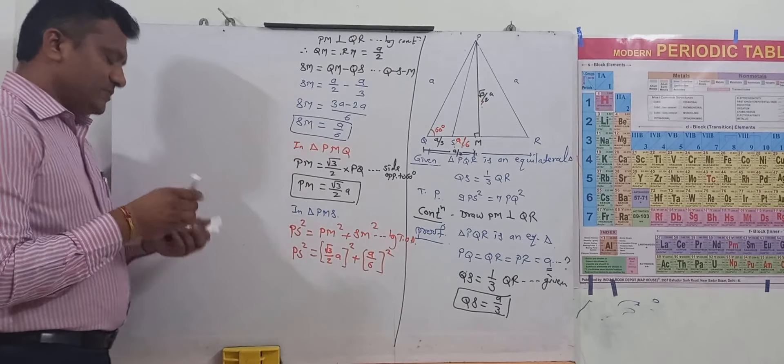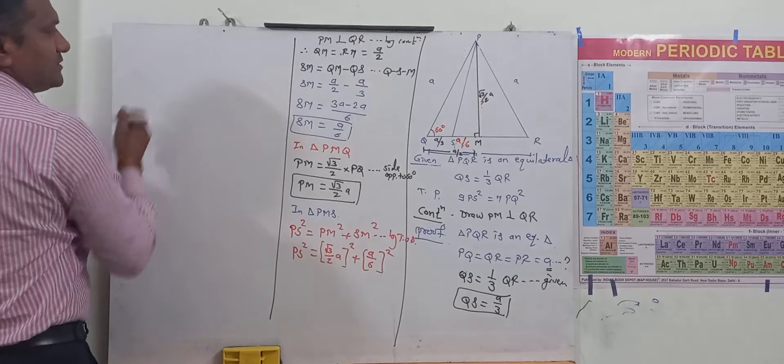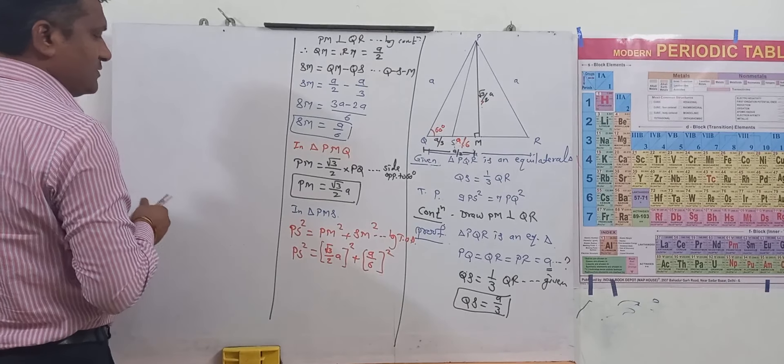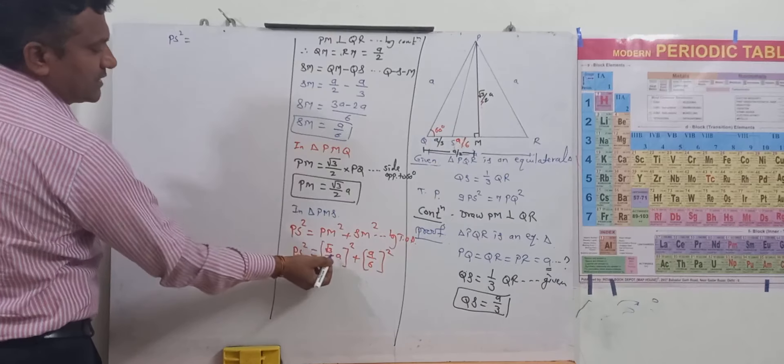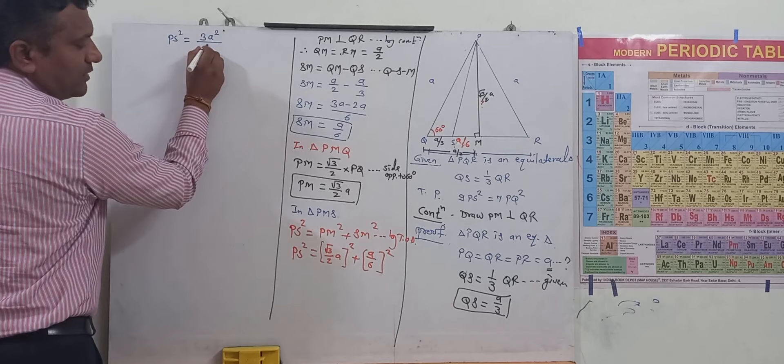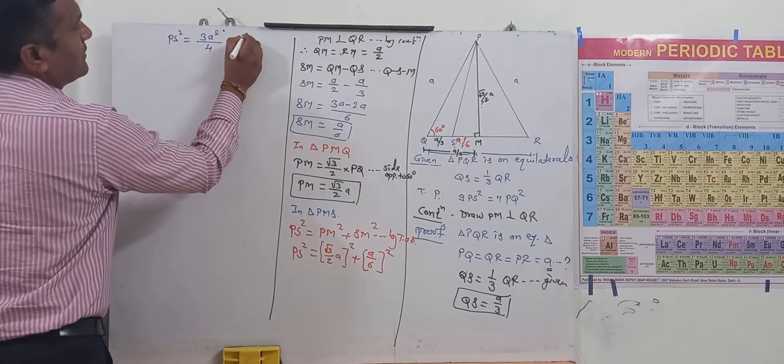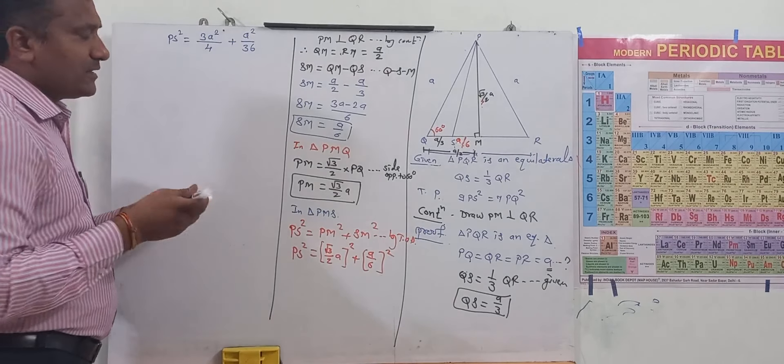So simple it is nothing difficult in this. Now we are in the next things over here. Look at here, now PS square equal to root 3 ka square kitna ho ga 3, A ka square A square ho ga upon 4 plus A square upon 36.